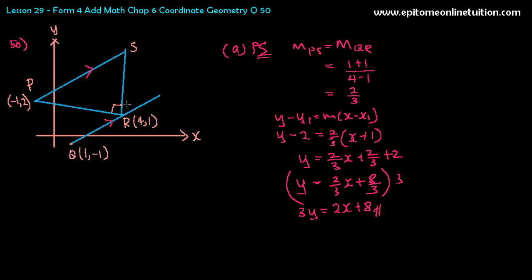So the gradient of RS, is the inverse of the gradient of PR. So let's find the gradient of PR first. We're looking for the equation of the line RS. So to find this, you find gradient of PR first. M of PR would be 1 minus 2 over 4 minus minus 1 is 4 plus 1. So that's negative 1 over 5. That's M of PR.